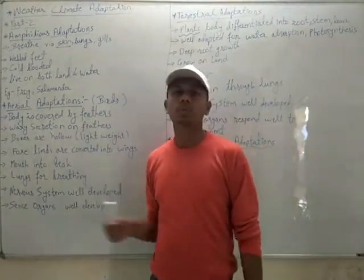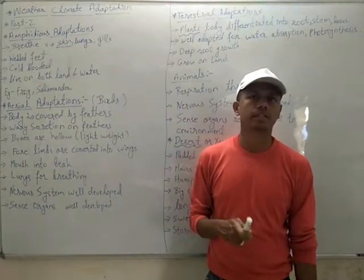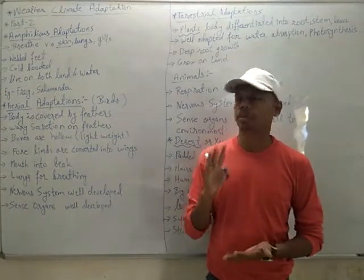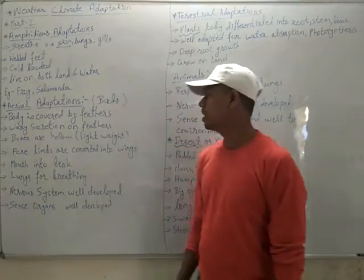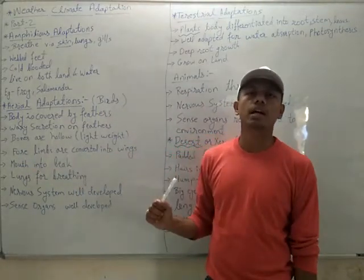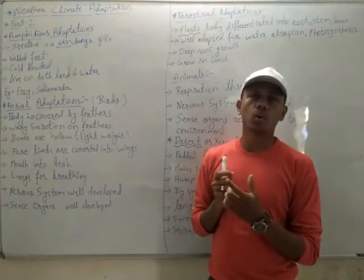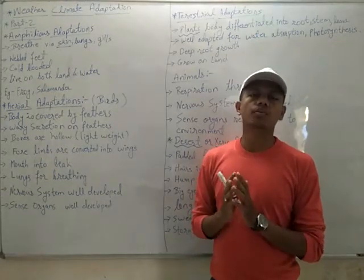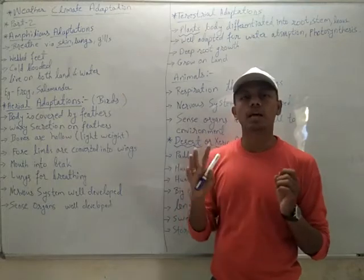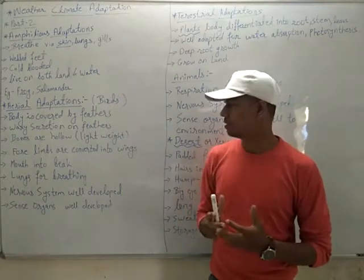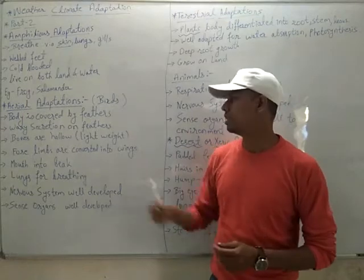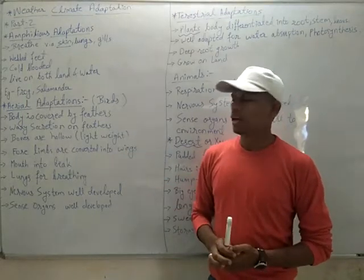Birds are protected from water in the rainy season and the feathers also act as an insulator in winter, protecting them from cold temperature. Another adaptation seen in aerial organisms is that bones are hollow from inside — they have a spongy structure with air gaps inside the bones. This makes the bones very lightweight, which is why birds can fly very easily.